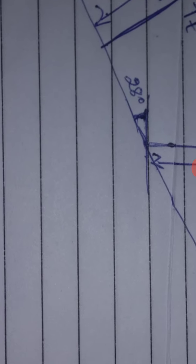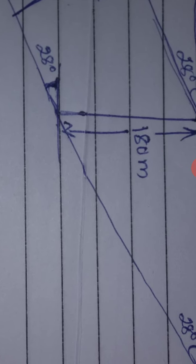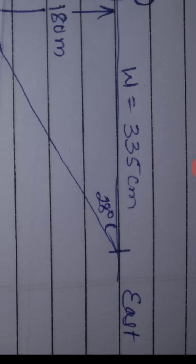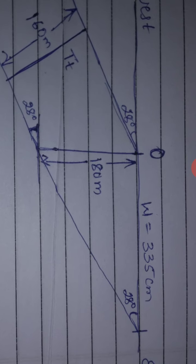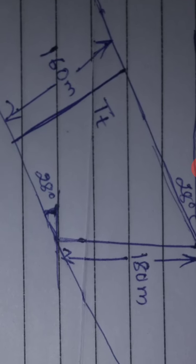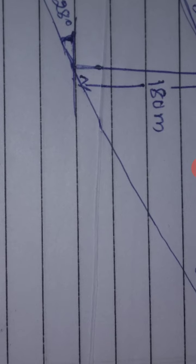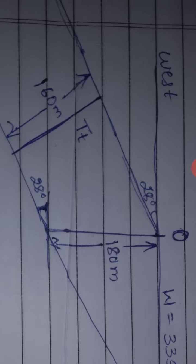From here, we measure 28 degrees from the horizontal parallel line and draw a line that reaches the surface — this becomes the lower bedding plane. From observation point O, we draw one line parallel to this line, which becomes the upper bedding plane. So we now have the upper and lower bedding planes established.